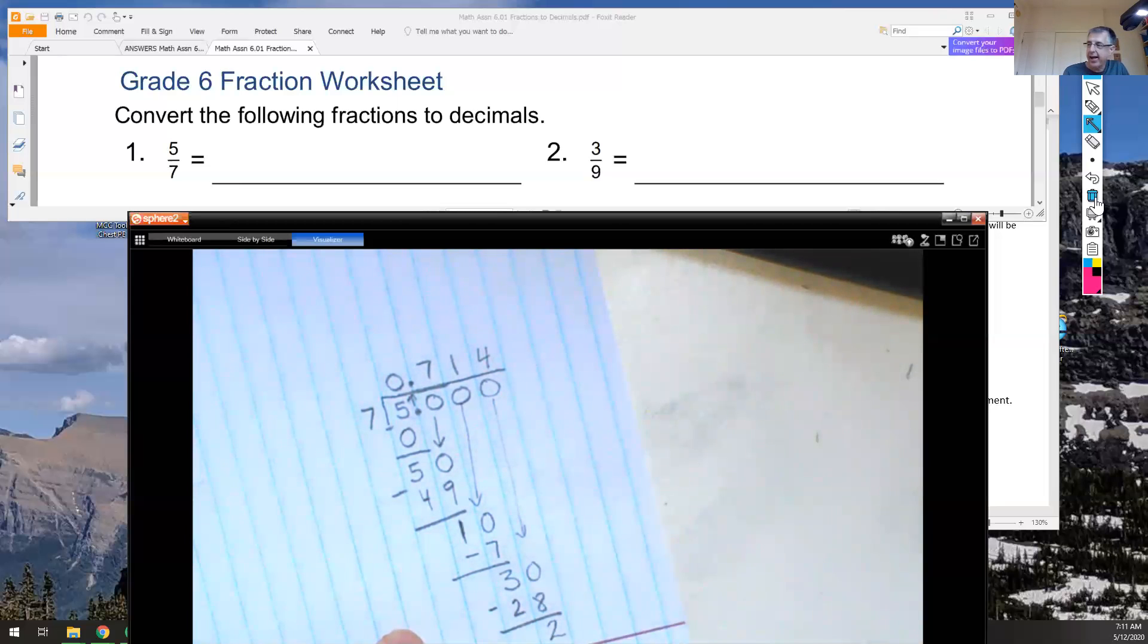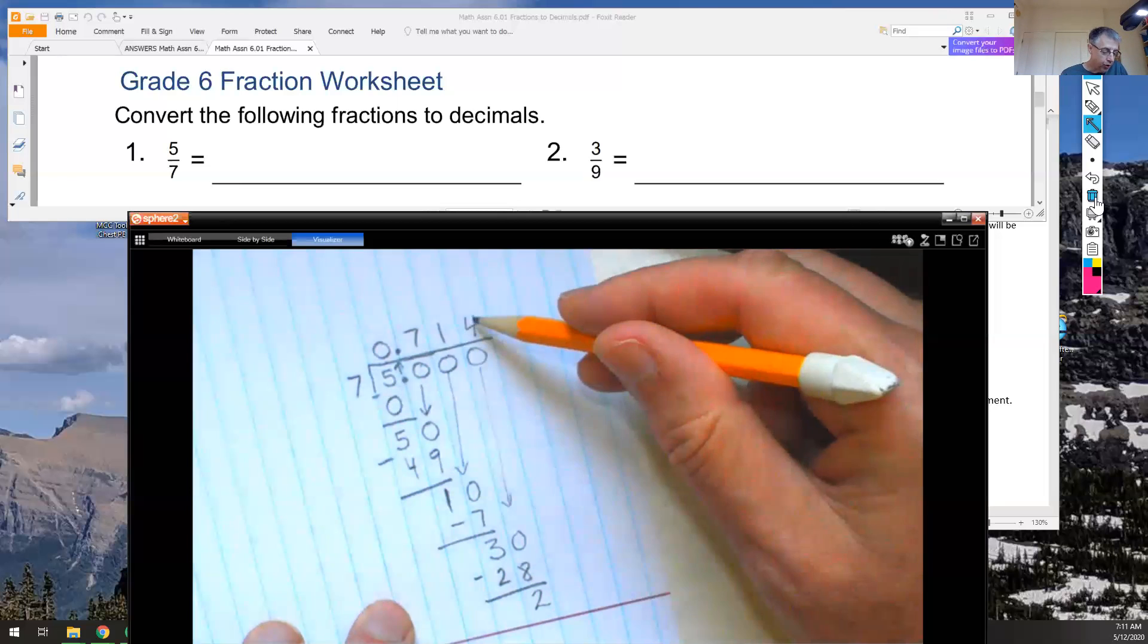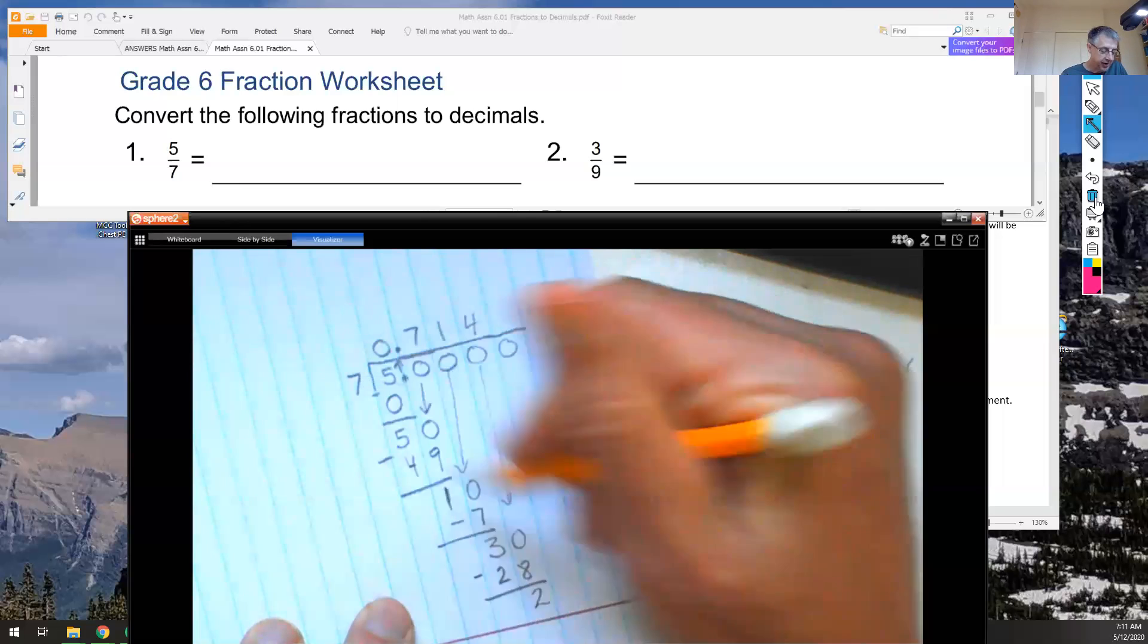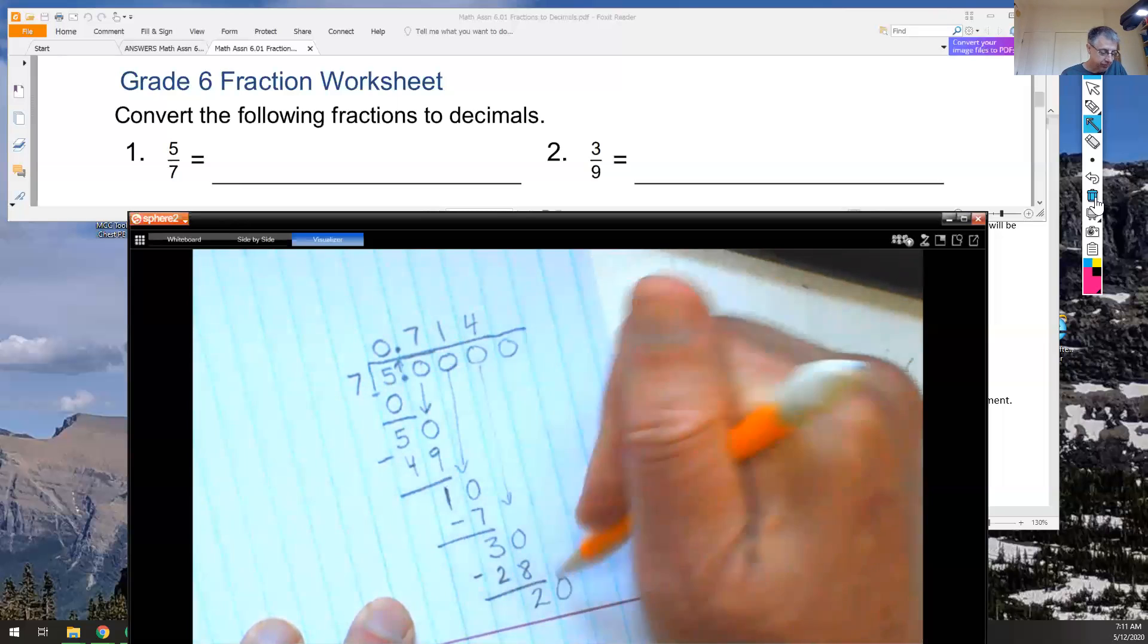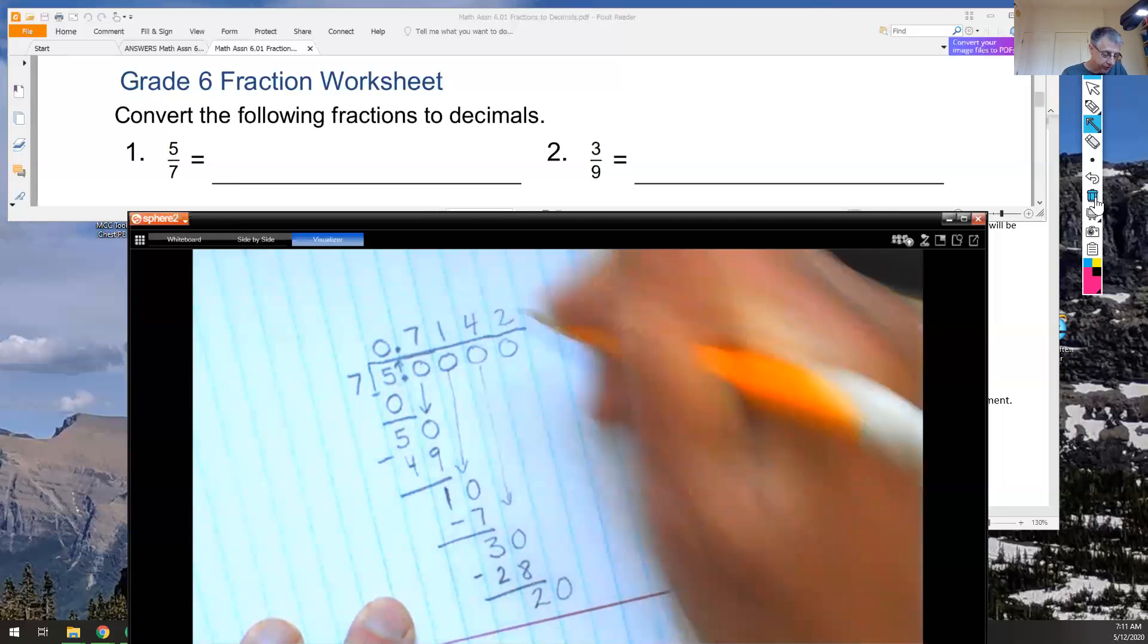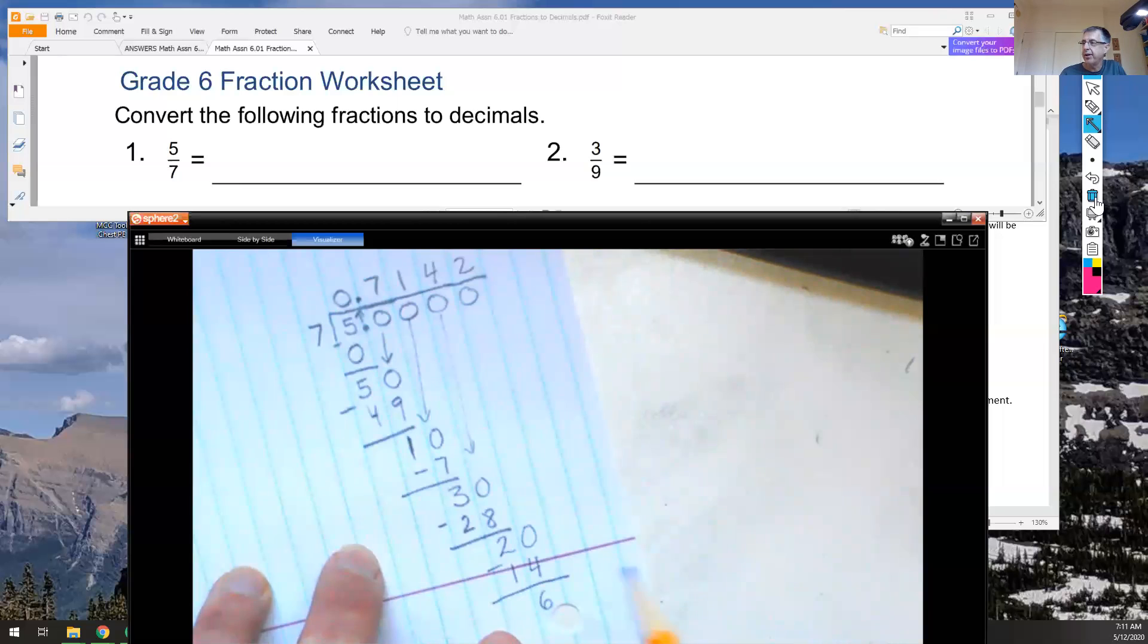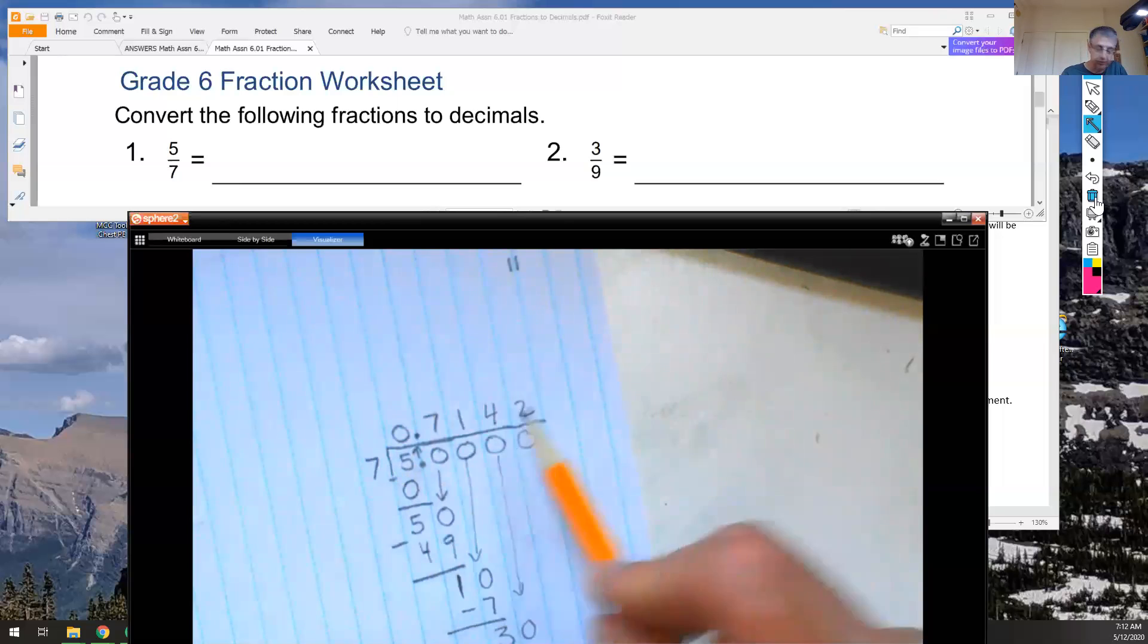Now it looks like I have a remainder, and I'm at the thousandths place. I want you to continue one more place value until you get to the ten thousandths place. Add a 0, and then just go 7 times. Let's drop down our 0. 7 times 2 is close to 14. It's close to 20, which is 14. 20 minus 14 is 6, so I have a remainder. I'm not going to worry about my remainder of 6 right now. I'm going to pay attention to the 2 that I used when I did 7 times 2 is 14.